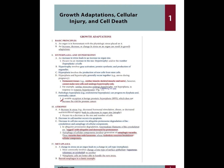Pathologic hyperplasia — for example, endometrial hyperplasia — can progress to dysplasia and eventually cancer. A notable exception is benign prostatic hyperplasia, or BPH, which does not increase the risk for prostate cancer.